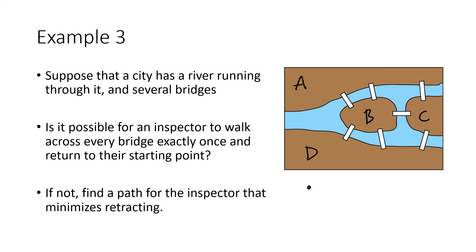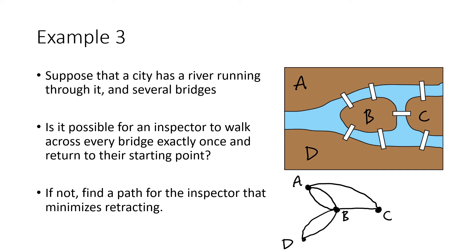We have four land masses A, B, C, and D, with one vertex each. There are two bridges from A to B, one from A to C, one from B to C, two from B to D, and one from D to C. Counting degrees: A has degree 3, B has degree 5, C has degree 3, and D has degree 3. All degrees are odd — this graph definitely does not have an Euler circuit.